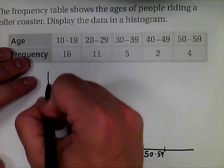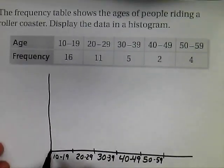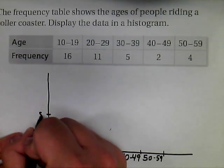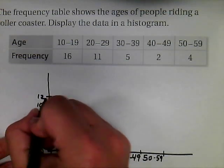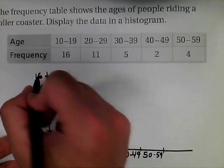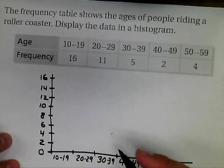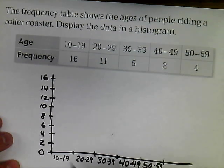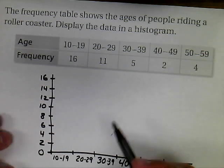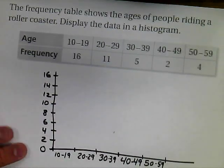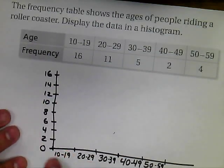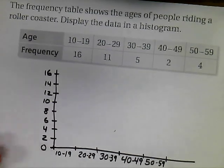My y-axis meets at the origin. Since my highest frequency is 16, I'm going to count by twos: 0, 2, 4, 6, 8, 10, 12, 14, 16. It's a good rule of thumb to aim for between five and ten intervals on the y-axis. You want to pick a scale — counting by twos, fours, fives, or tens — that keeps the data manageable. Counting by twos is ideal here.